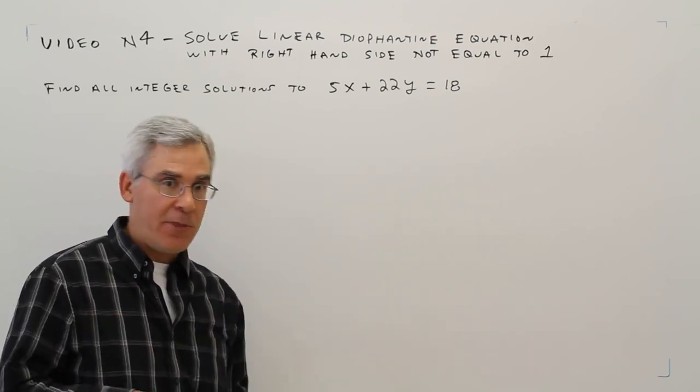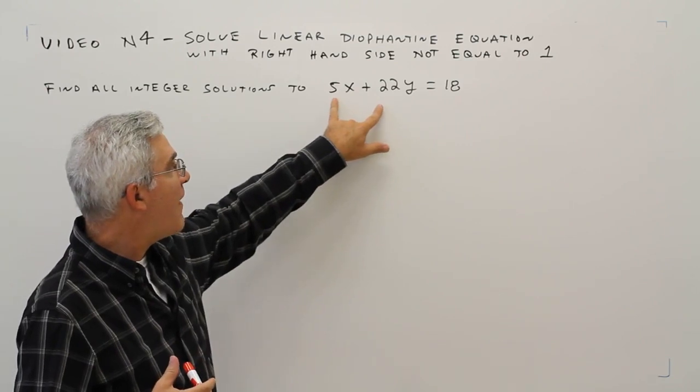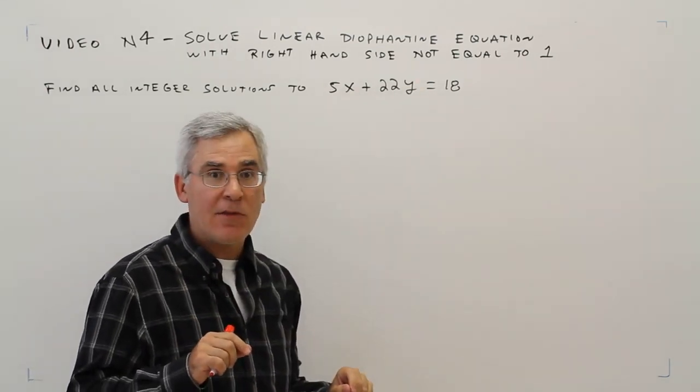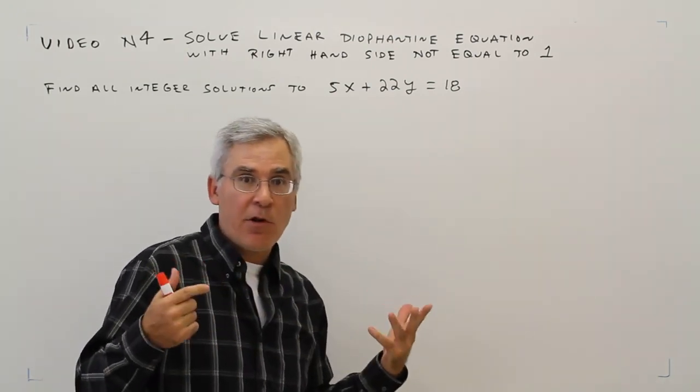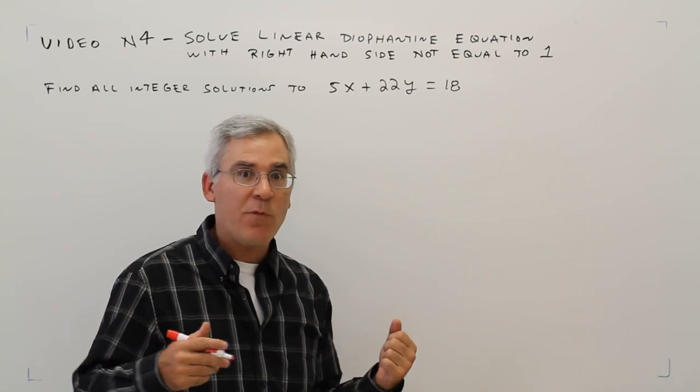Just to speed things up, step 1: let's see if there are solutions. The GCD of 5 and 22 is 1. 1 does divide 18. 18 divided by 1 is 18. So there is indeed a solution, which means infinitely many.